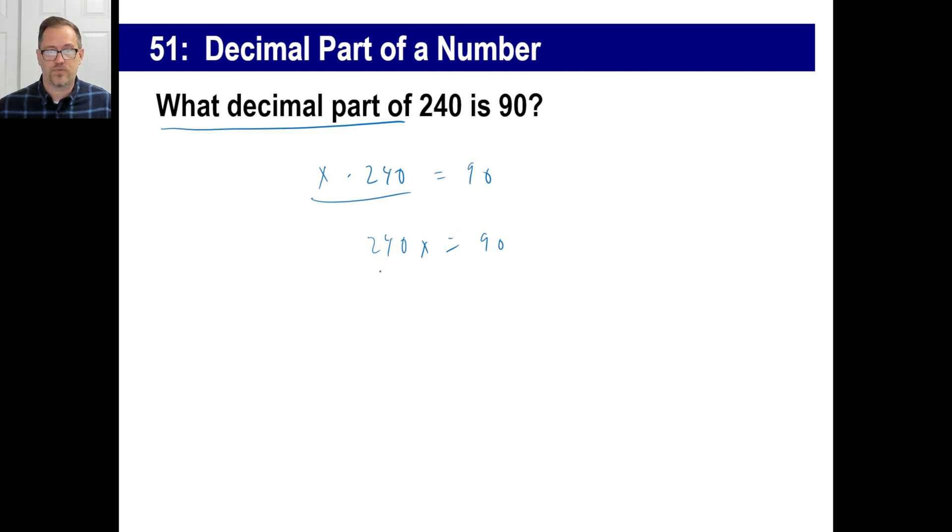All you need to do now to solve for x is divide by 240. Divide by 240. Nope, done. Chop the zeros off. 9 over 24. You can break that down. That's going to be 3 over 8.